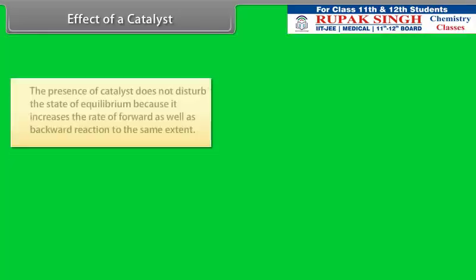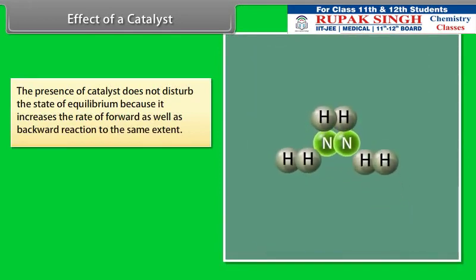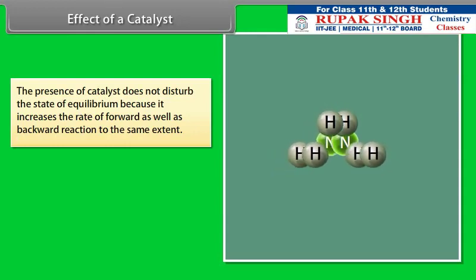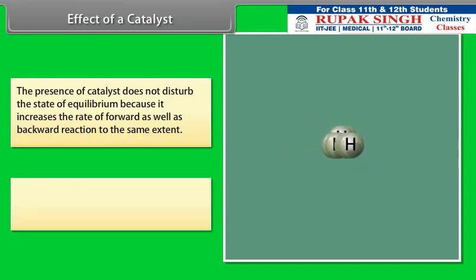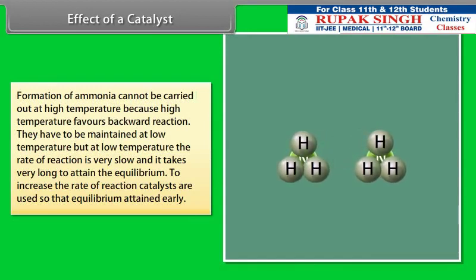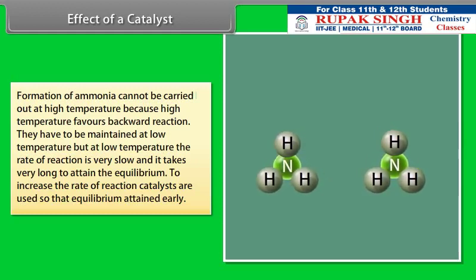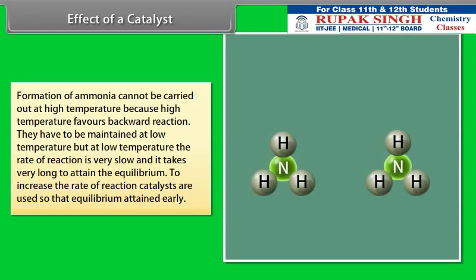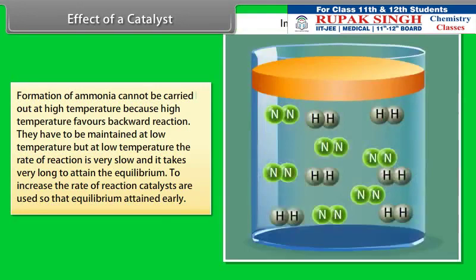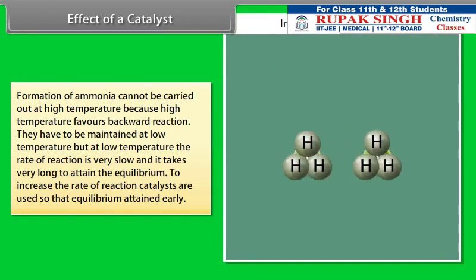Effect of a Catalyst: The presence of a catalyst does not disturb the state of equilibrium because it increases the rate of both the forward and backward reactions to the same extent. The formation of ammonia cannot be carried out at high temperature because high temperature favors the backward reaction. It must be maintained at low temperature, but at low temperature the rate of reaction is very slow and it takes very long to attain equilibrium. Therefore, catalysts are used to increase the rate of reaction so that equilibrium is attained earlier.